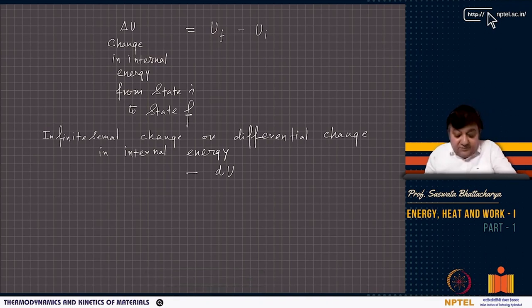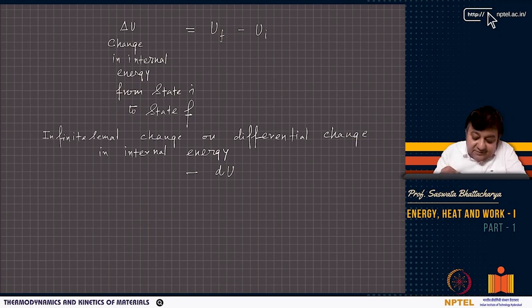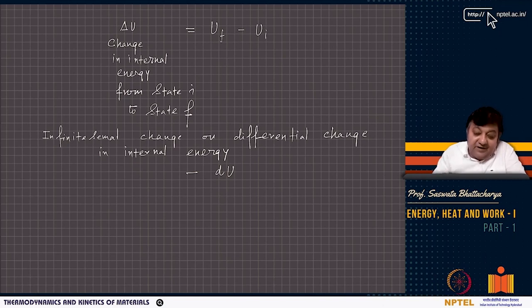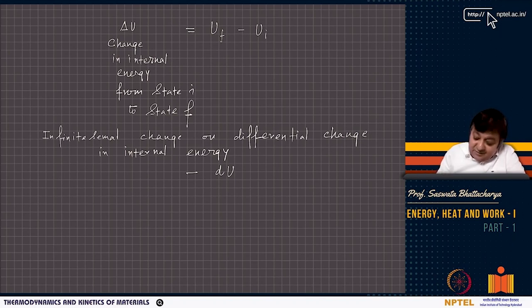As we discussed, U is a state function and delta U, the change in internal energy, depends only on the final and initial states — that is Uf minus Ui. We can think of an infinitesimal or differential change in internal energy, known as dU.